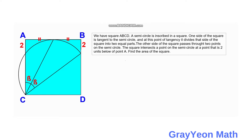The first thing we have to do is label this figure. We label the side of the square as S. Since the whole length of the square is S, this length should be S minus 2, and this is also S minus 2. Since the two halves are congruent as given in the problem, each is S over 2.